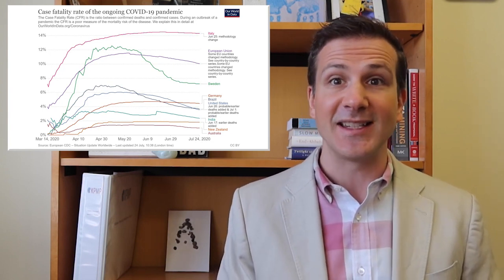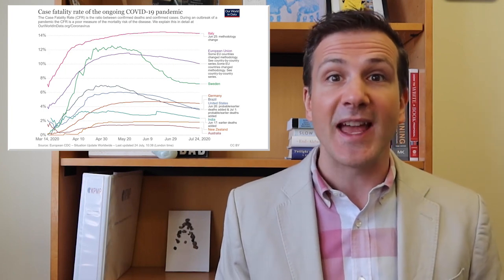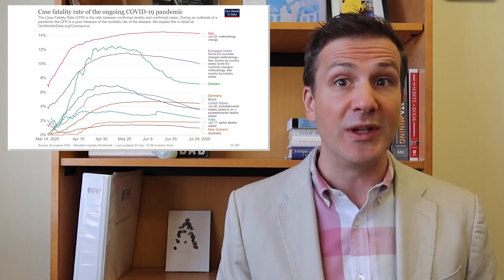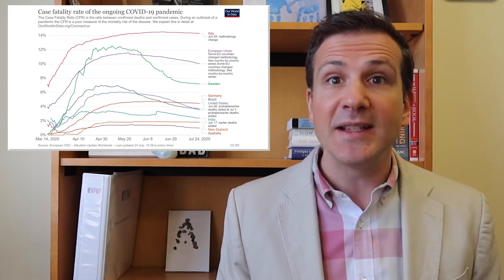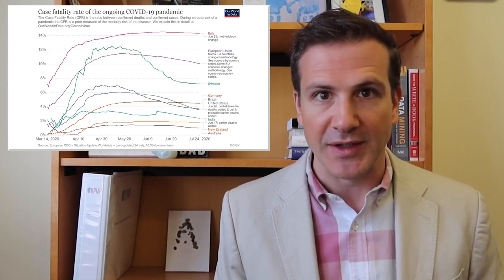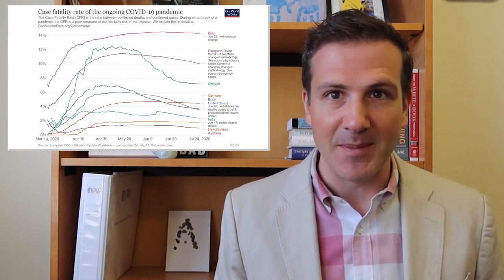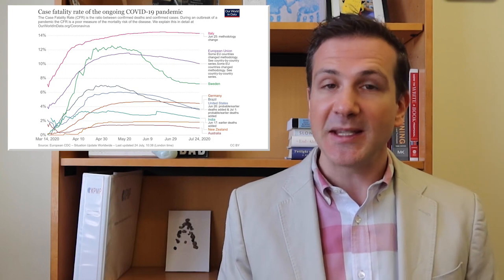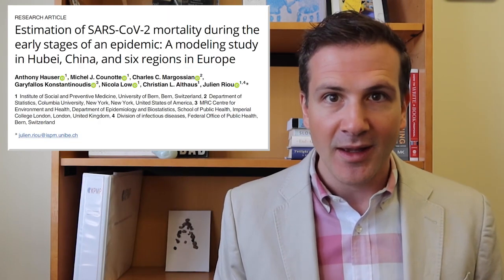This is not to say we're containing the virus well — just that among those who get it, the chance of survival is about as good here as those other countries. But there are two big problems with the case fatality rate metric — problems this paper appearing in PLOS Medicine attempts to solve.